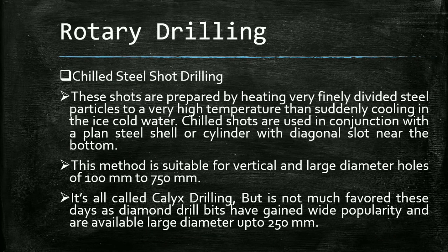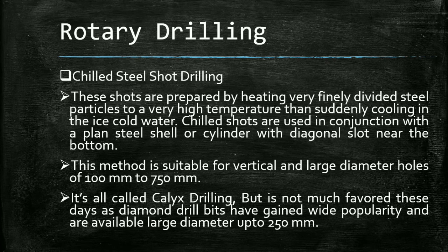The last subtype of rotary drilling is chilled steel shot drilling. In this method, shots are prepared by heating very finely divided steel particles to a very high temperature and then suddenly cooling them in ice-cold water. Chilled shots are used in conjunction with a plain steel cylinder with a diagonal slot near the bottom.